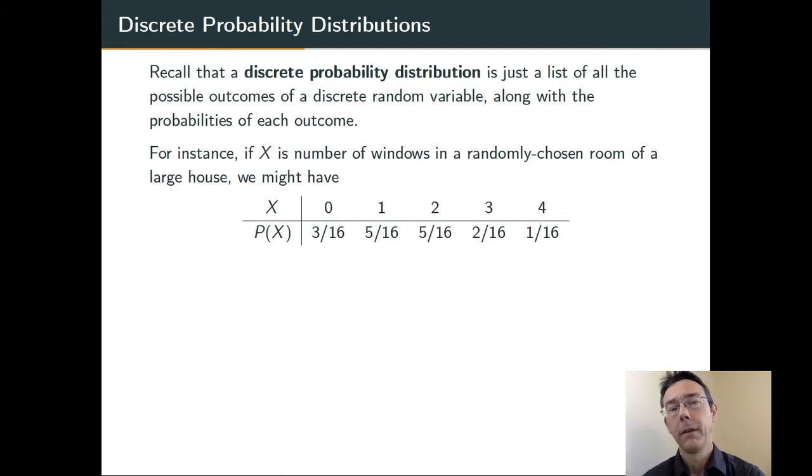Quick example. Suppose we have a house with 16 rooms. We're going to pick a room at random and count the number of windows in that room. So there are rooms with 0, 1, 2, 3, and 4 windows.